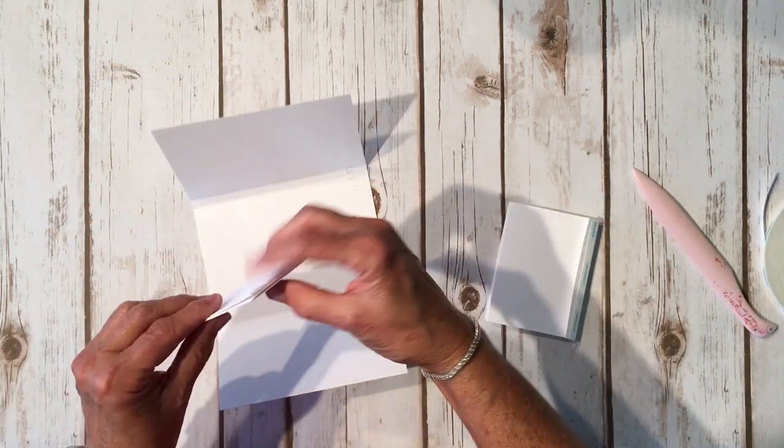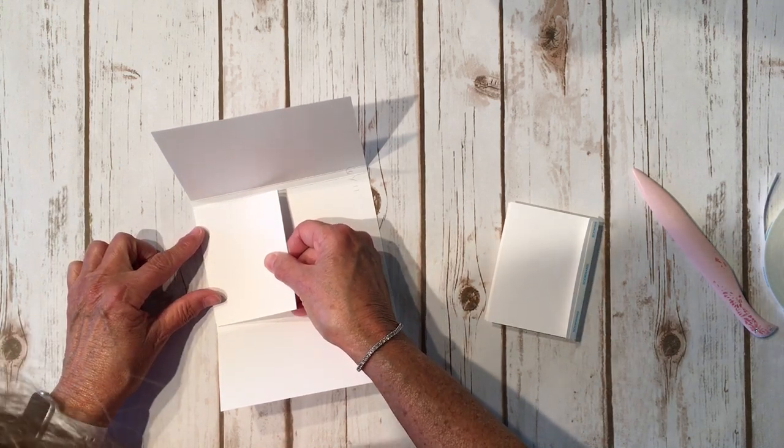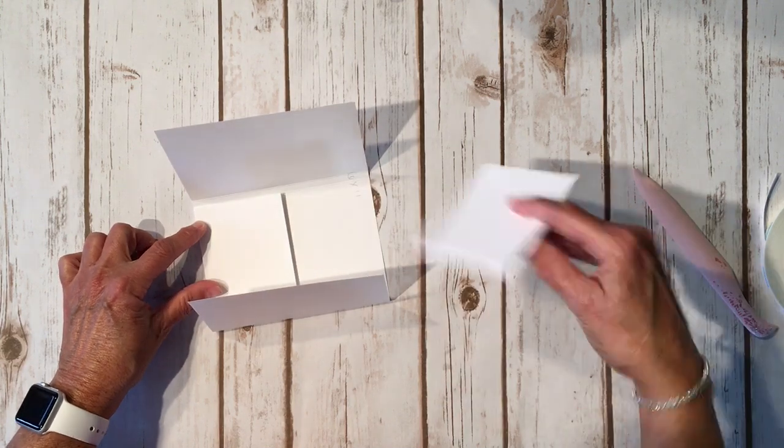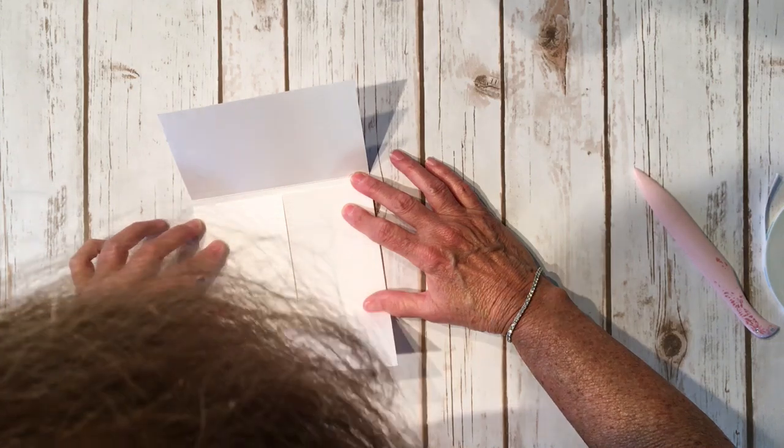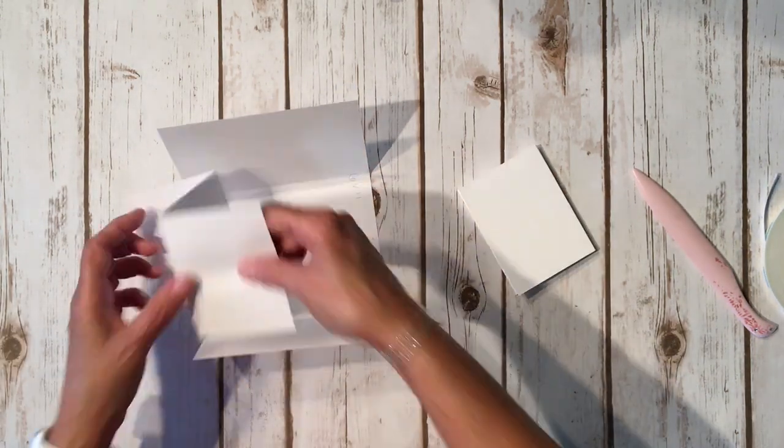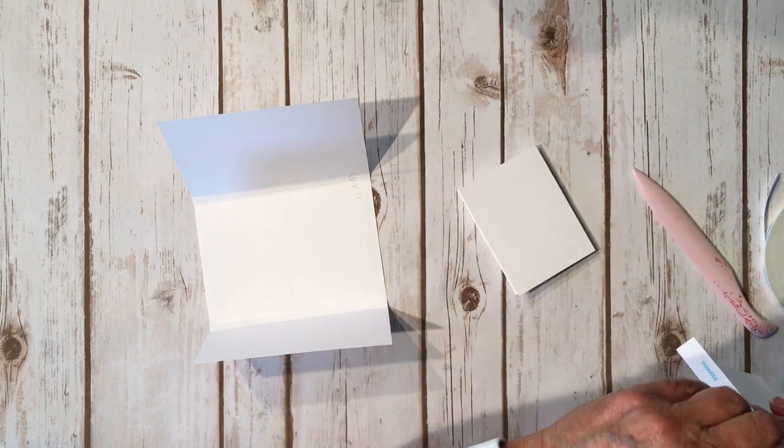Then we're going to go ahead and put these, one on this side, and we're going to position them right in our score lines, like this. And this one like this. They should meet right up because we scored them at three and six. So we're going to go just like that. You can decorate this any which way you want.